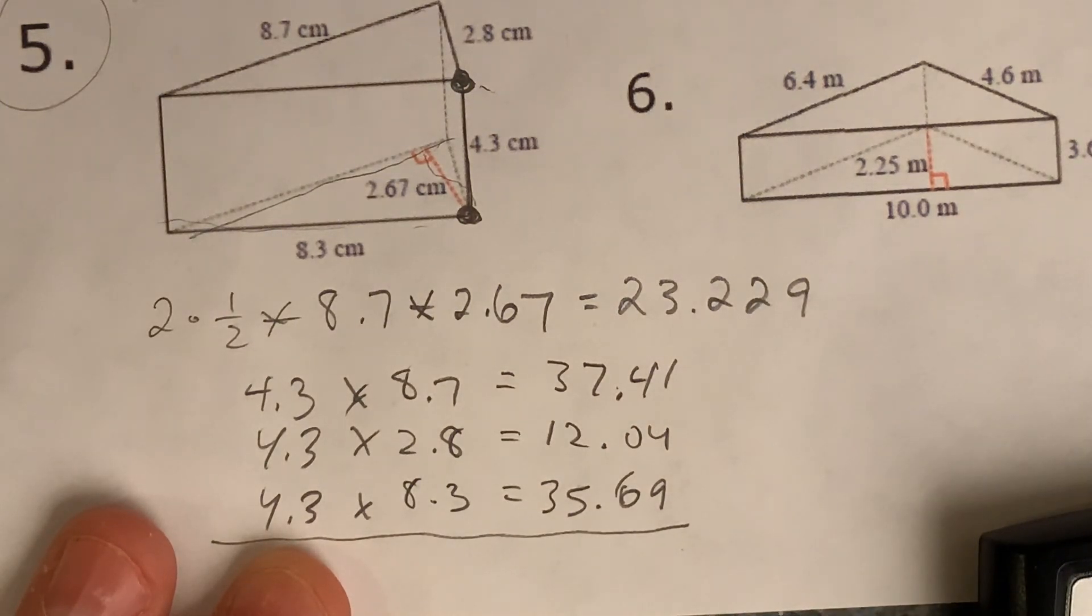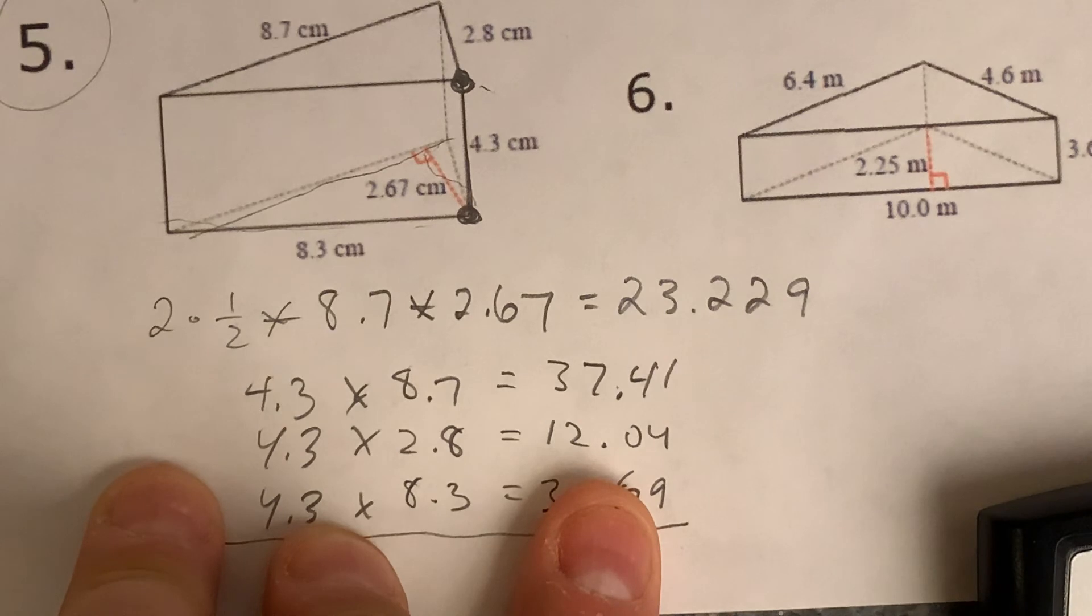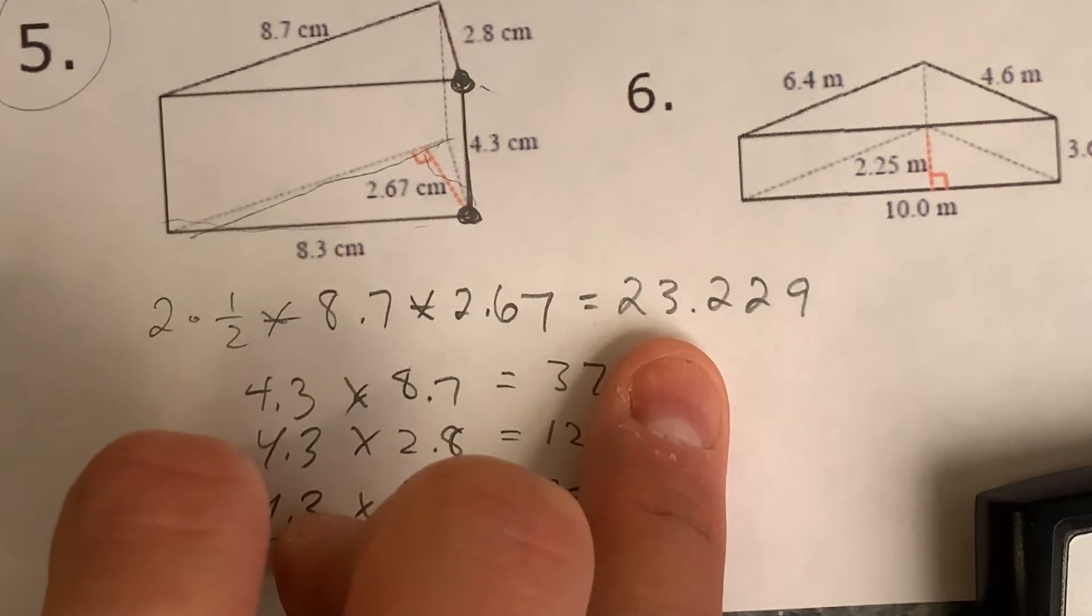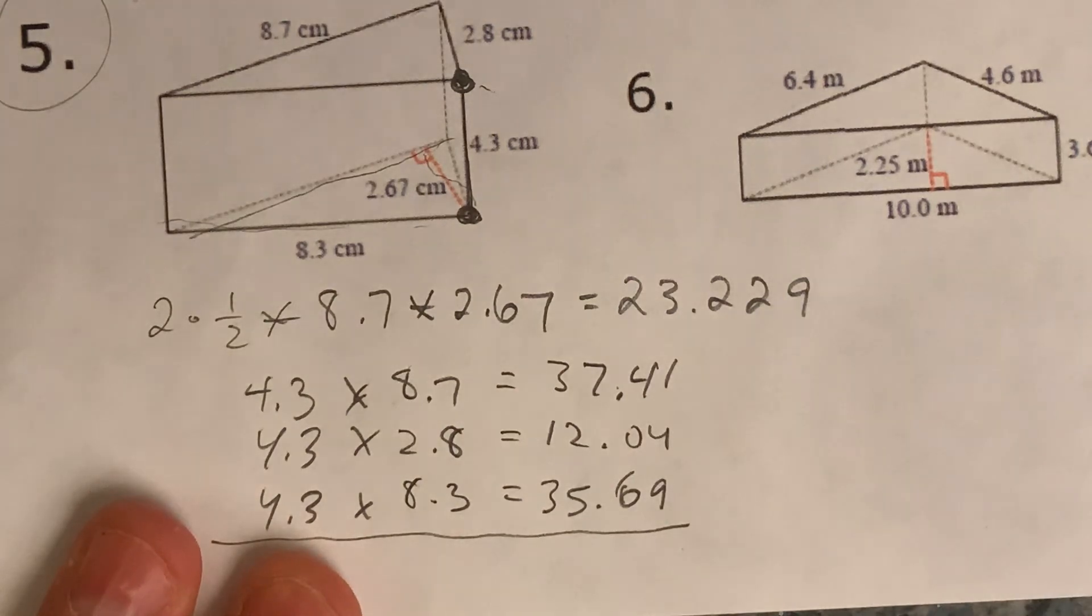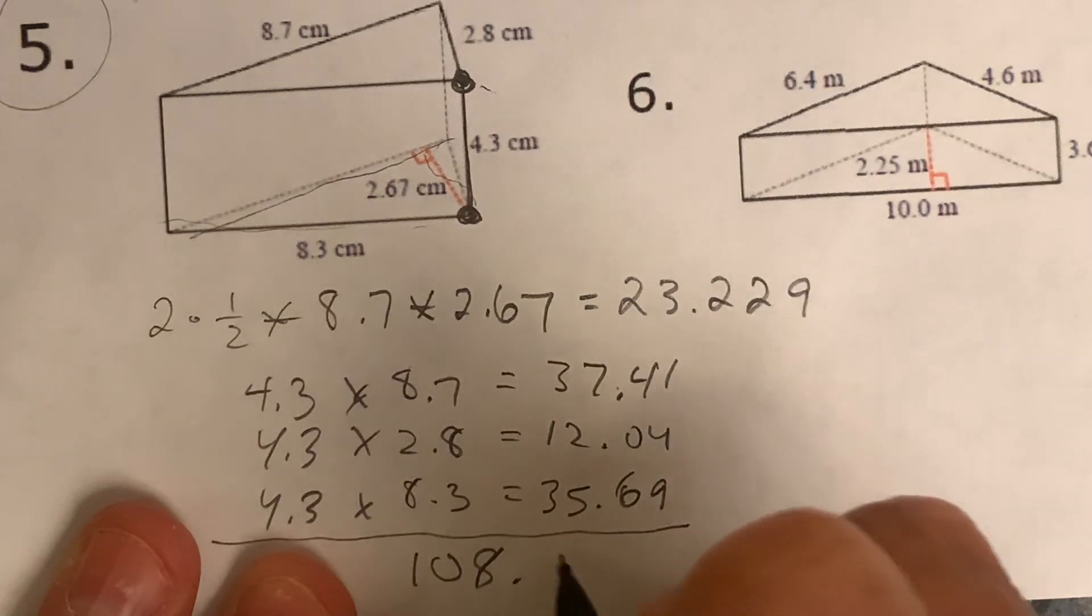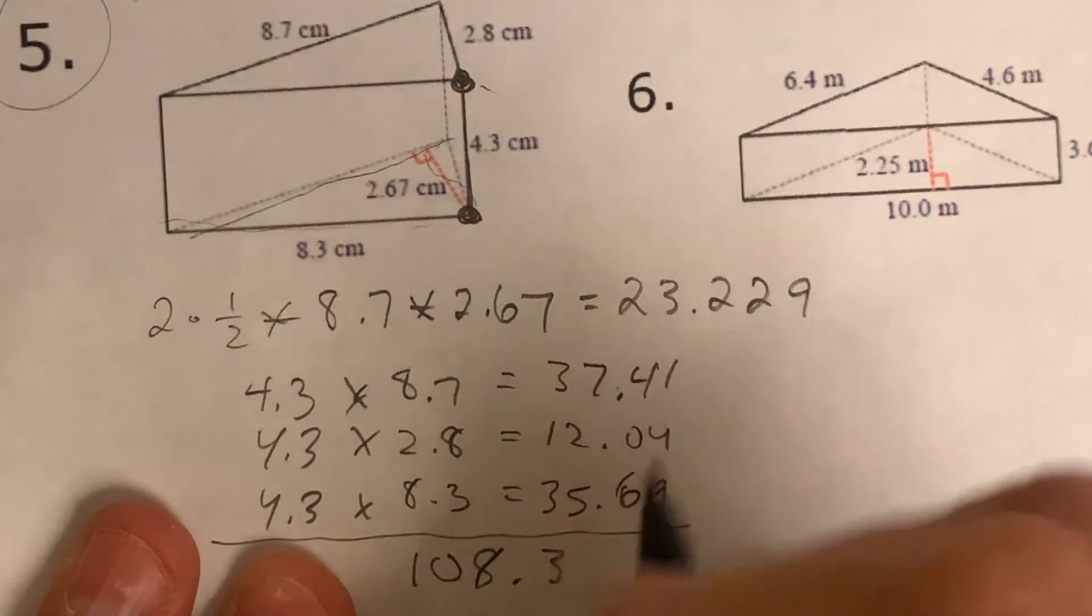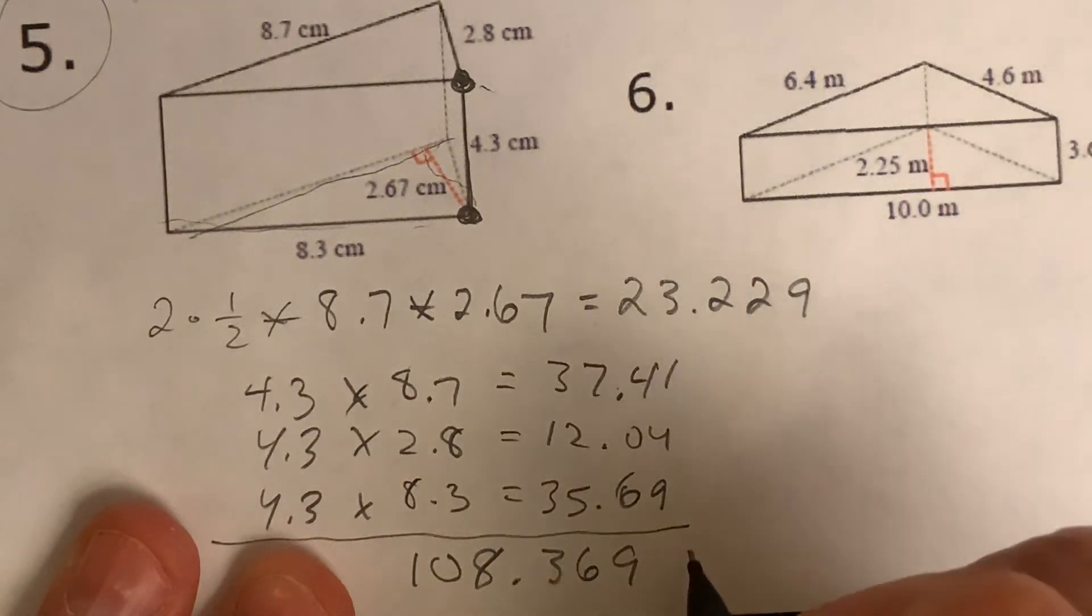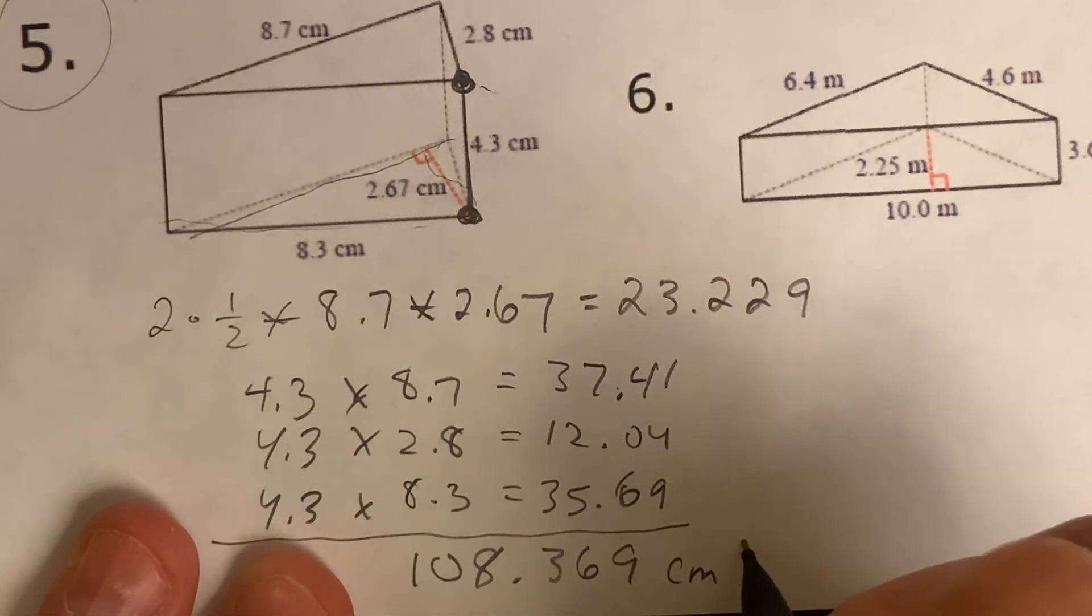Now I'm going to add them all together. Let's add them all up and get the total. So it's going to be 35.69, I'll go backwards, plus 12.04, plus 37.41, plus 23.229. I hope this is right, I got 108.369. We'll probably round that to the nearest tenth or something like that. And this is going to be centimeters squared again.